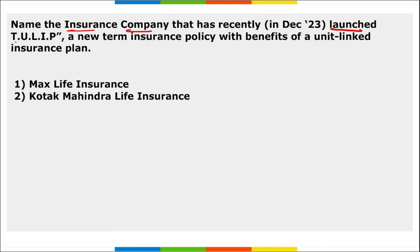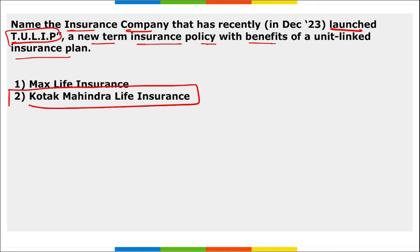Next: name the insurance company that recently launched TULIP — a new term insurance policy with benefits of a unit-linked insurance plan. It was launched by Kotak Mahindra Life Insurance. TULIP stands for Term ULIP. It offers a refund of two times the premium allocation charges in the 10th, 11th, 12th, and 13th year, and loyalty addition of up to 30 percent of the fund value.